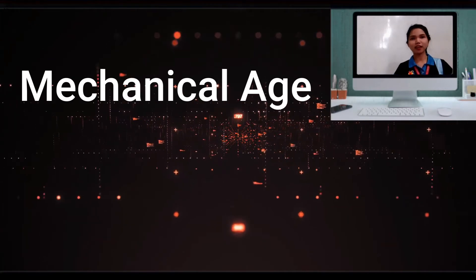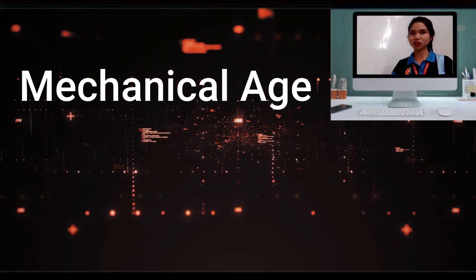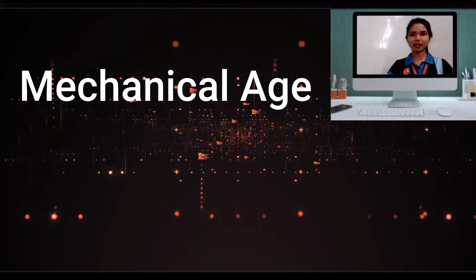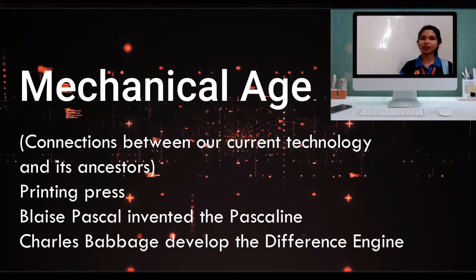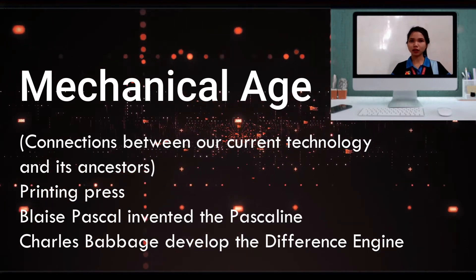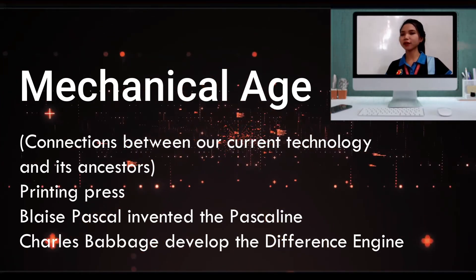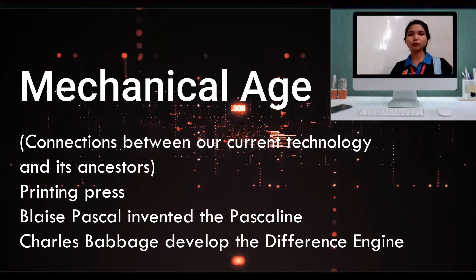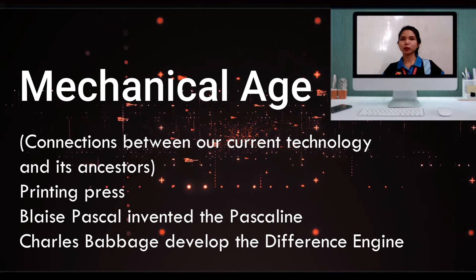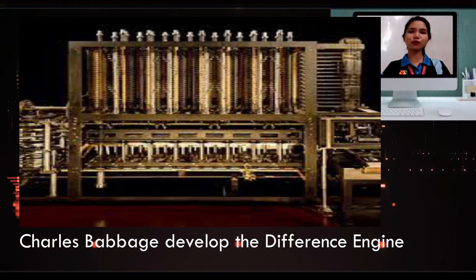The second age of information technology is called the mechanical age, between 1450 and 1840 AD. This age is when we first start to see the connections between our current technology and its ancestors. At that time, they discovered the printing press. Blaise Pascal invented the Pascaline, and Charles Babbage developed the difference engine, which tabulated polynomial equations using the method of finite differences.